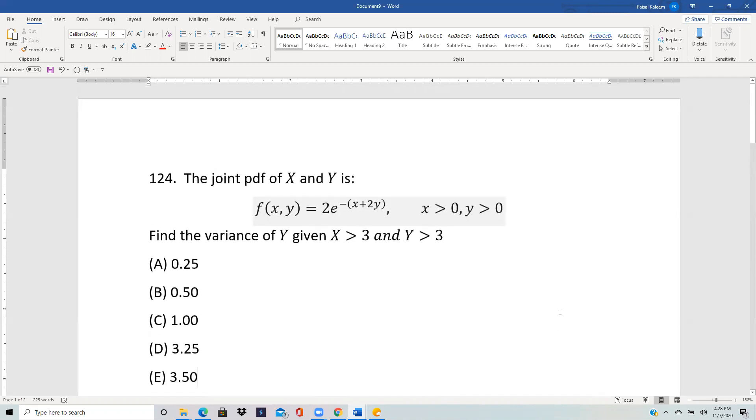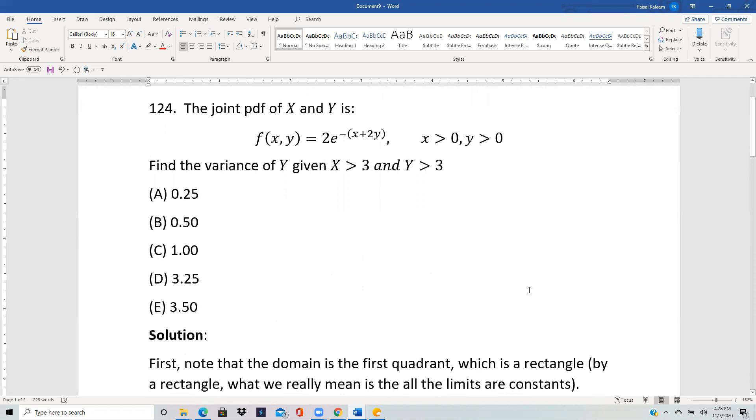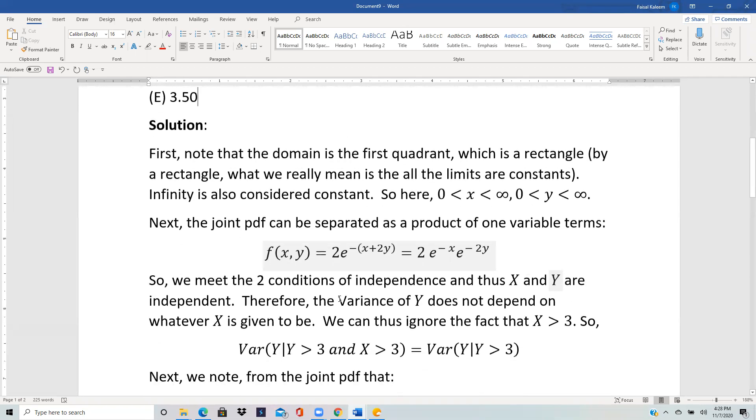And the second condition is that you should be able to write the joint pdf as a product of one variable times the product of the other variable, which is also something we can do here because we can break this up into e^(-x) and e^(-2y) and then write it like this for example. So you can think of 2e^(-x) times e^(-2y). So we have separated it out into product of one variable only and the product of the other variable only.